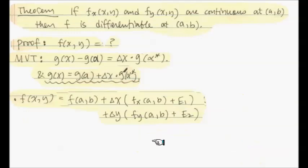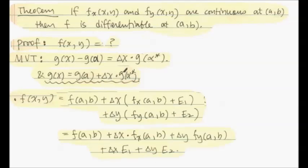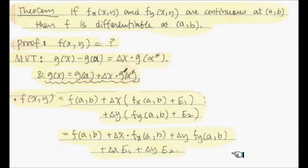If we replace the partial derivative values with these expressions, expanding gives: f_x(a,b)·Δx + f_y(a,b)·Δy plus e₁ and e₂ terms with exactly the correct approaching-zero behavior. That concludes the proof that f(x, y) is in the differentiable structure — exactly the definition of differentiability. Again, continuity kicks in together with the mean value theorem, making this proof work nicely.